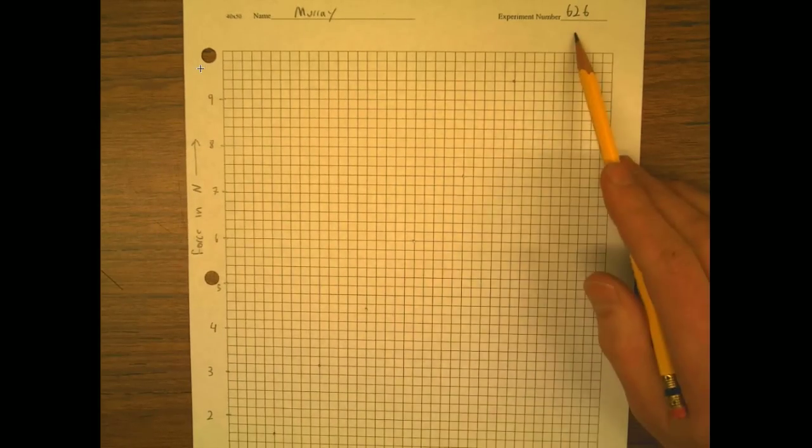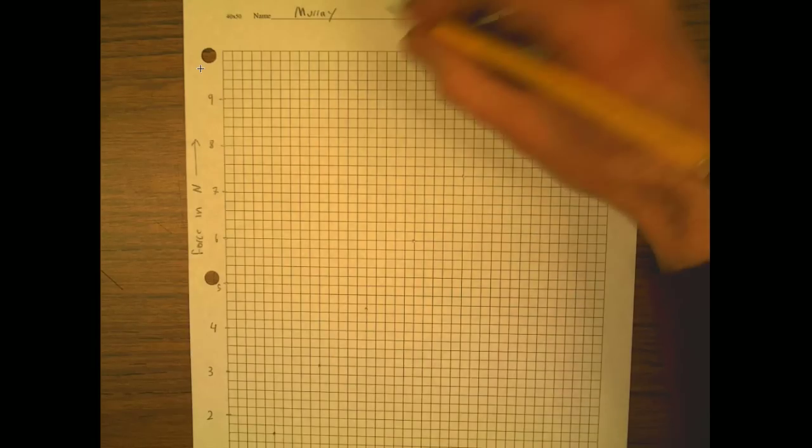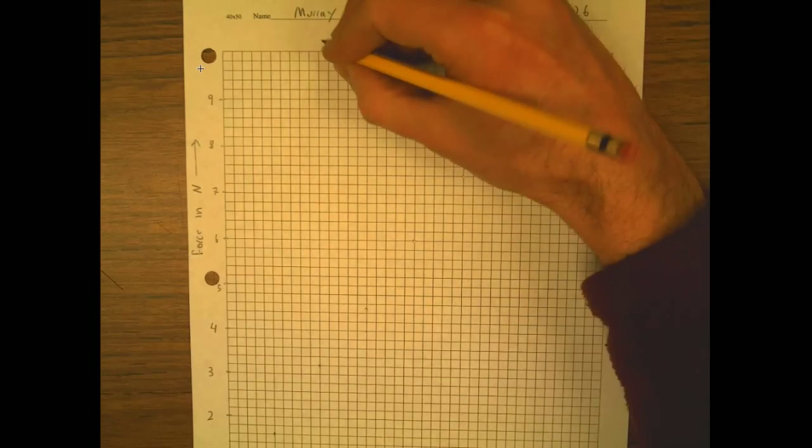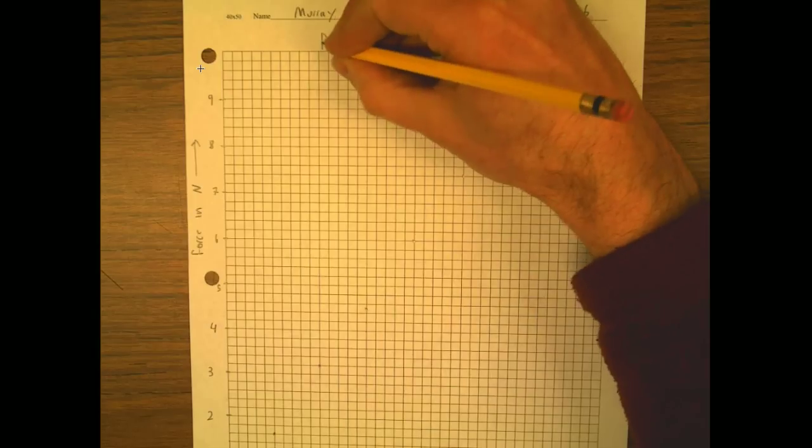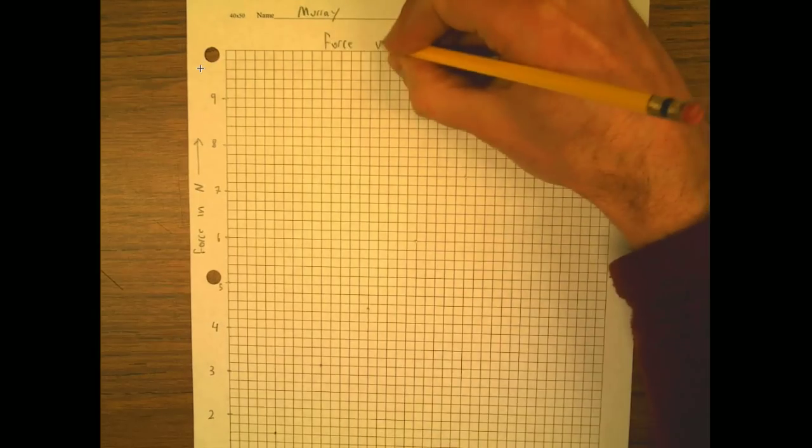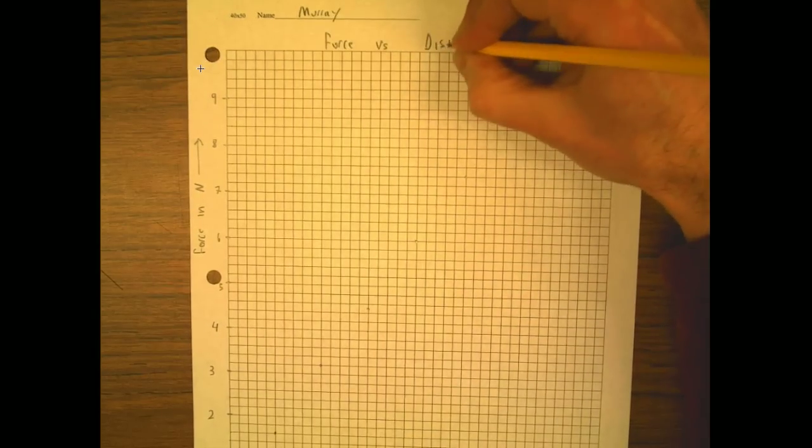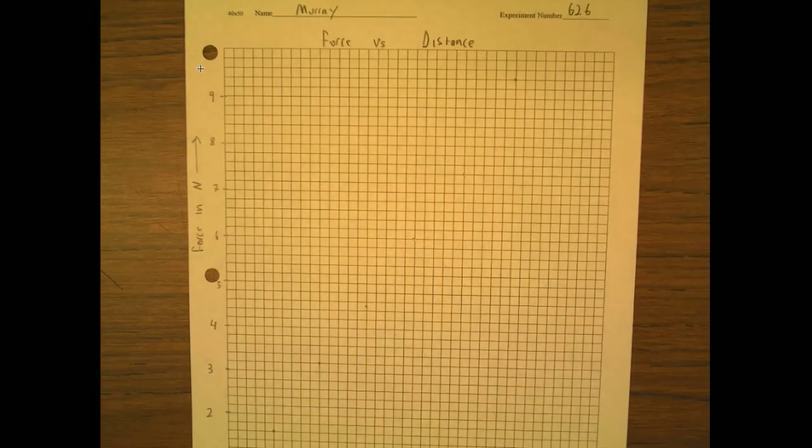The experiment number is always experiment number 626. And then the only thing we need to make this a beautiful graph is to say force versus distance. This is, by the way, called a force curve. This is a spring.